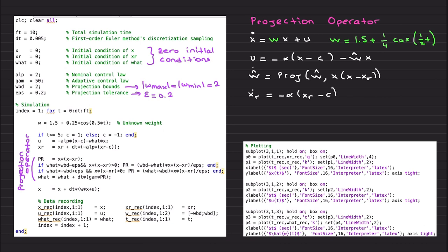First, I'd like to give the simulation code so you can take screenshots and implement it for your own needs. I consider zero initial conditions: x(0)=0, reference model state=0, w-hat(0)=0. You can explore non-zero initial conditions. Alpha is 2 for the nominal controller, and I'm using an adaptation gain gamma of 50.